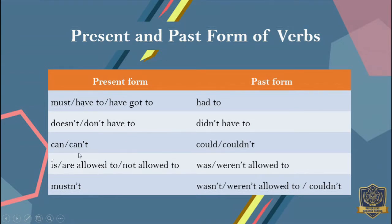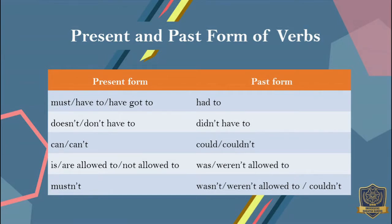'Can', 'can't' — the past form is 'could' or 'couldn't'. 'Is allowed to' or 'not allowed to' — the past form is 'was' or 'were allowed to', or if negative, 'wasn't' or 'weren't allowed to'. And 'mustn't' becomes 'wasn't' or 'weren't allowed to', or you can also use 'couldn't'. So it still has the same meaning, but when used in the past form, you change to this pattern.